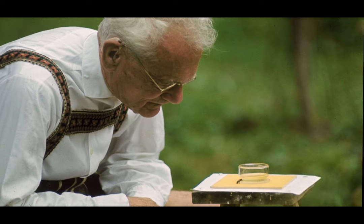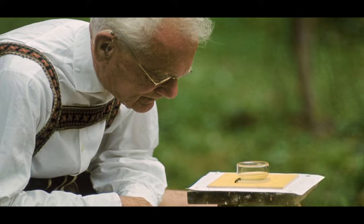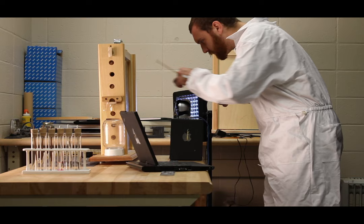To answer this question, Austrian biologist Karl von Frisch devised a series of experiments in the 1940s. Researchers at Georgia Tech have reproduced von Frisch's pioneering experiments using a modern observation hive.